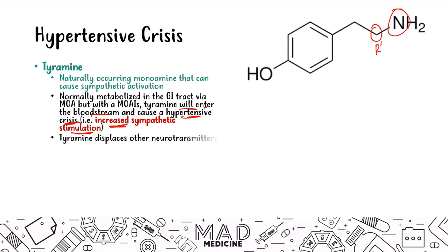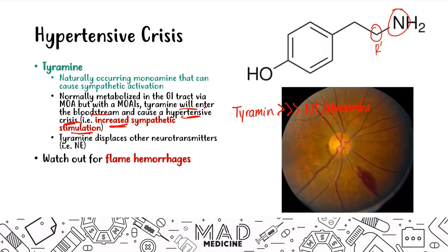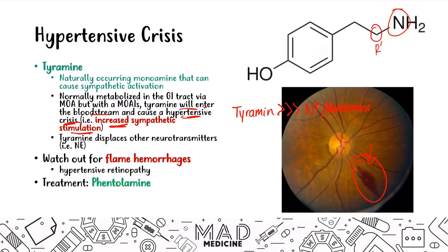Tyramine is stronger than the other neurotransmitters and will displace them. One consequence of hypertensive crisis is flame hemorrhages — retinal hemorrhages due to hypertensive retinopathy. Because you have such high blood pressure, the vessels rupture and blood leaks into the retina. If you see this picture in a psychiatric setting, it's probably due to MAOIs. The treatment is phentolamine, an alpha adrenergic blocker that causes vasodilation.